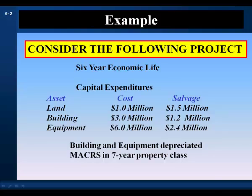The project has a six-year economic life and requires the following capital expenditures. We're going to acquire land for $1 million, a building for $3 million, and equipment costing $6 million. At the end of the project, we're going to sell off these assets with expected salvage values: land at $1.5 million, building at $1.2 million, and equipment at $2.4 million. Building and equipment are depreciated in a seven-year property class, and land doesn't depreciate.